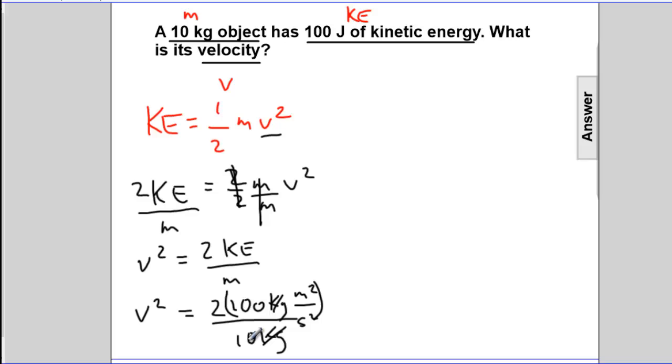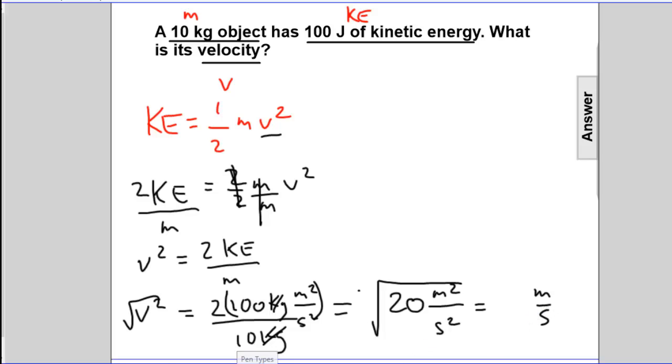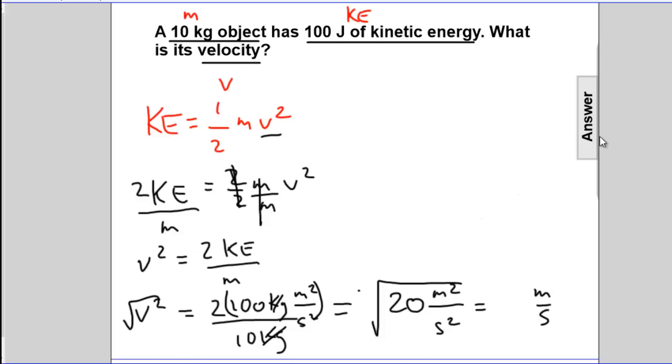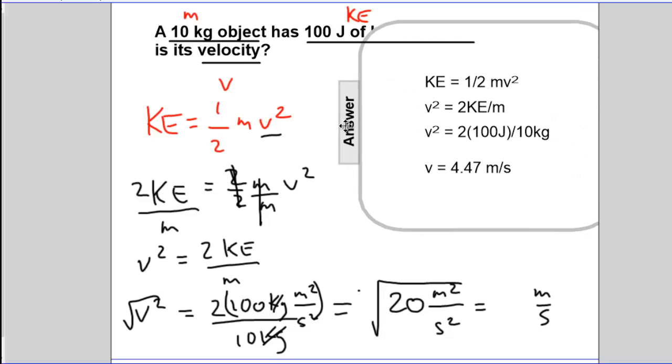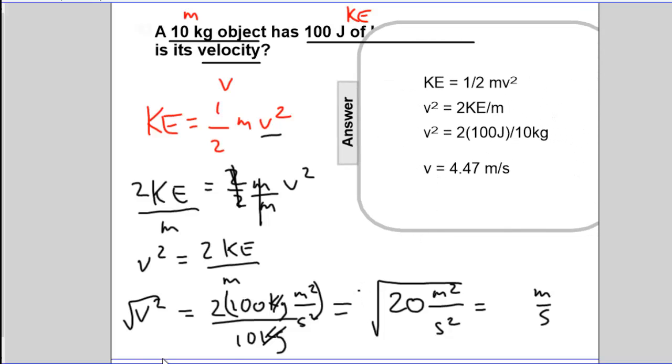Square root of 20—V squared equals 20. So we rewrite: V squared equals 20 meters squared per second squared. If we take the square root of both sides, we'll end up with units of meters per second. The square root of 20 is 4.47. Nice work.